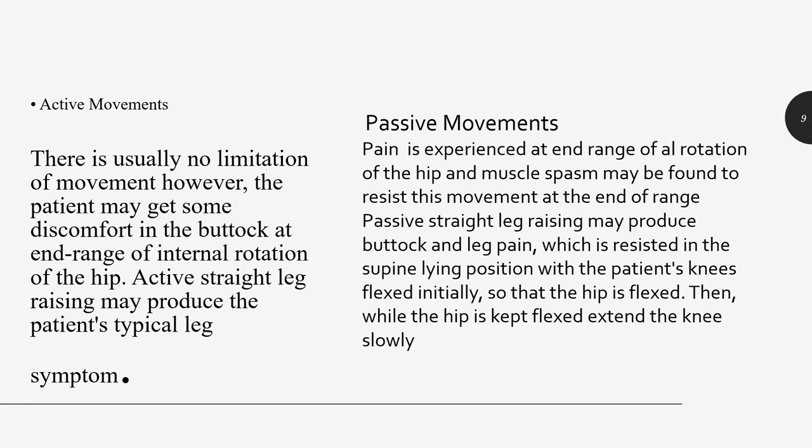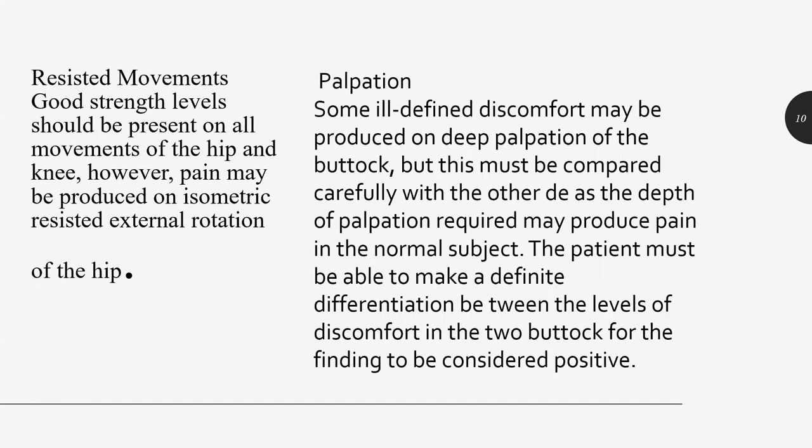For passive movements: pain is experienced at the end range of lateral rotation of the hip, and muscle spasm may be found to resist this movement. Passive straight leg raising may produce buttock and leg pain. The test is performed in supine lying with the patient's knee flexed initially, then while the hip is kept flexed, the knee is slowly extended. Good strength should be present on all movements of the hip and knee.